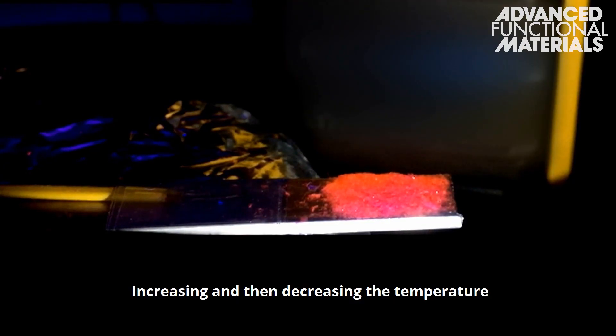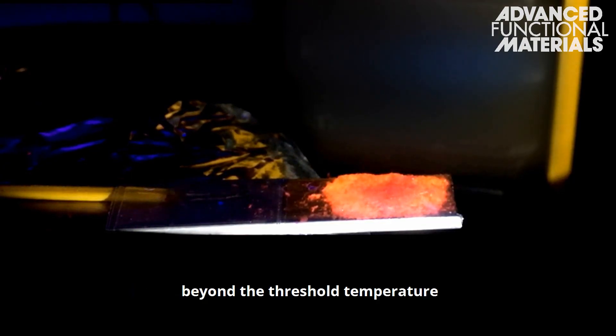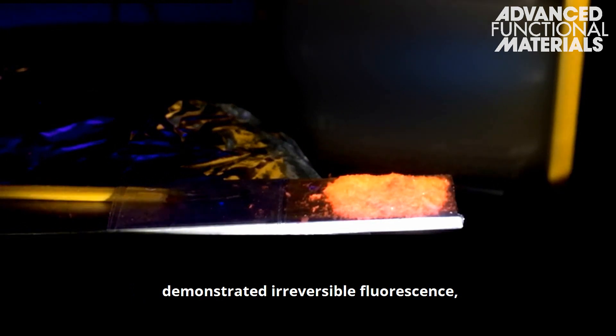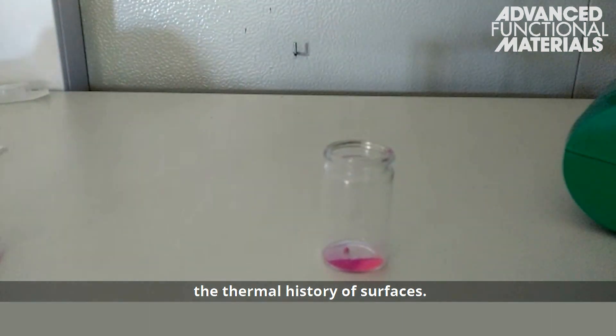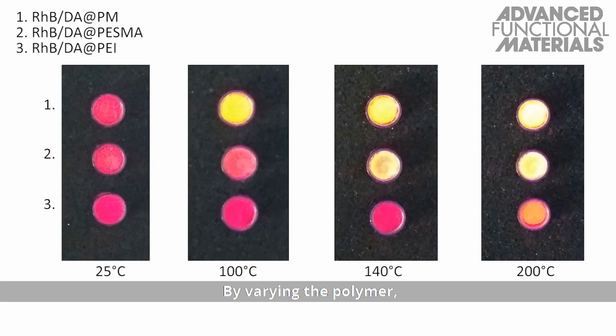Increasing and then decreasing the temperature beyond the threshold temperature demonstrated irreversible fluorescence, making these NPs suitable for recording the thermal history of surfaces. By varying the polymer,